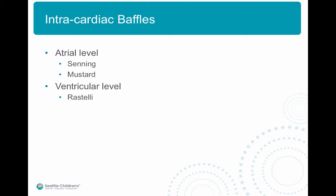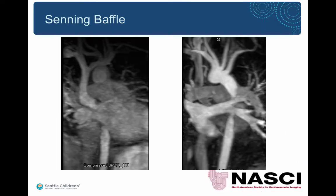The ventricular level baffle was performed by Rastelli in patients with D-transposition of great arteries and a VSD as well as pulmonary stenosis. A conduit was placed through the VSD making blood flow directly from the right ventricle into the aorta. Here's an example of a Senning baffle where blood flow from the superior vena cava is directed into the left atrium. There is no contrast in the IVC, but similarly the IVC blood flow is also directed towards the left atrium.